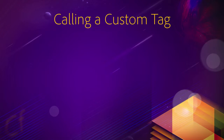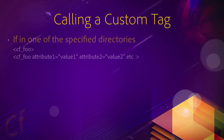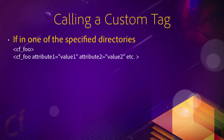If you have stored those custom tags in one of the locations described in the previous slide, you can use the syntax here: cf_underscore followed by the name of the file. So in this example, we imagine a foo.cfm file stored in one of the specified locations, and you can call that custom tag using cf_foo. What makes custom tags more interesting than regular includes is that you can customize the custom tag each time you call it by passing attributes, using exactly the same principle as for a regular CFML or HTML tag.